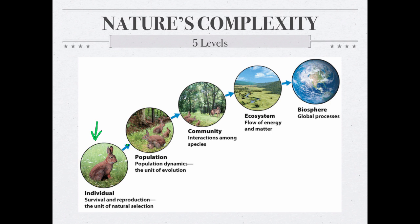The major things to know about the individual level of complexity is that this is the level at which survival and reproduction is super important. This is also the unit of natural selection. When natural selection is working on the natural world, it is working on an individual — not a population or an ecosystem. Natural selection selects for or against particular individuals.